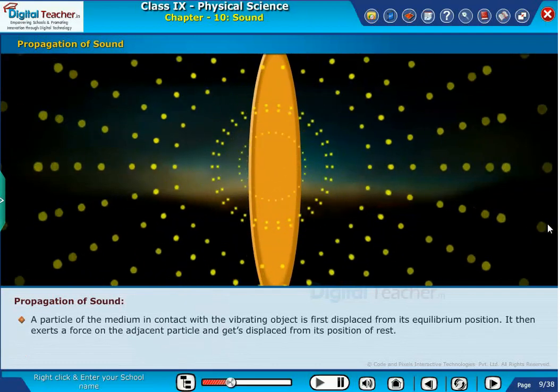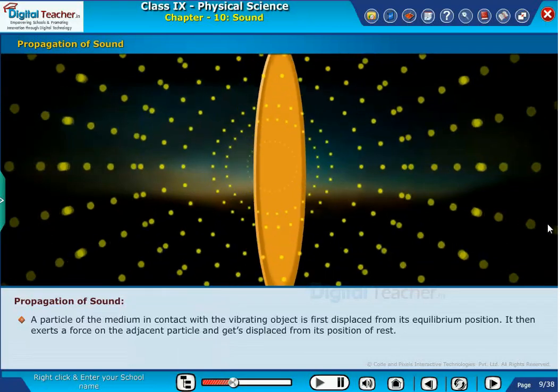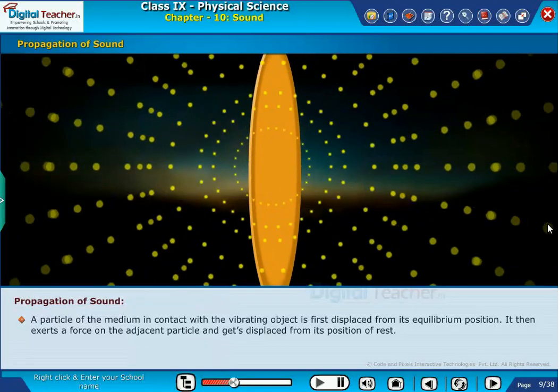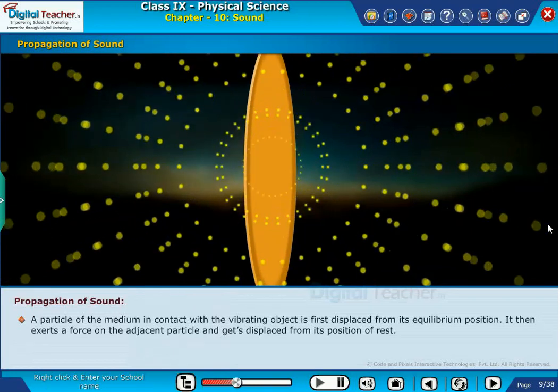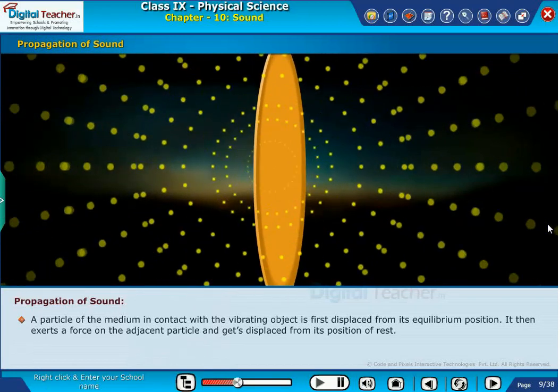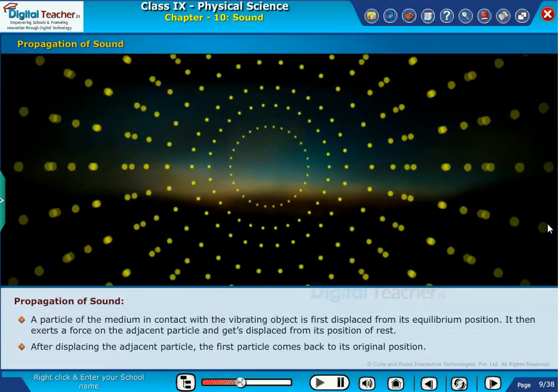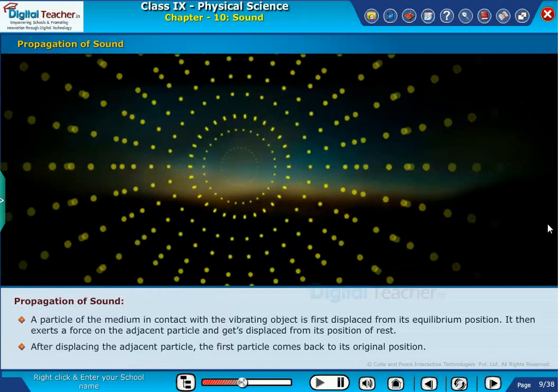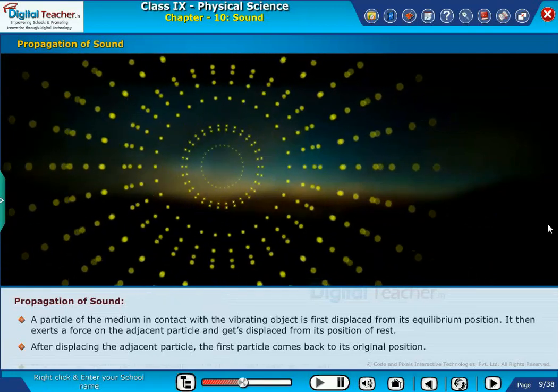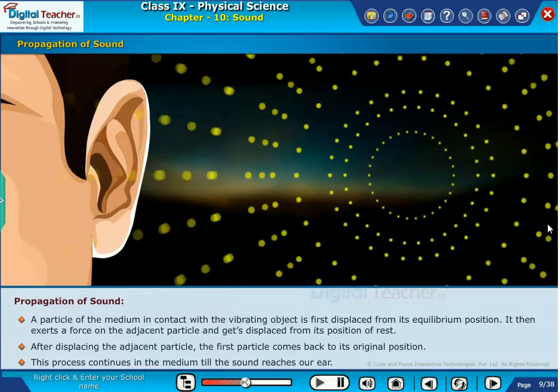A particle of the medium in contact with the vibrating object is first displaced from its equilibrium position. It then exerts a force on the adjacent particle and gets displaced from its position of rest. After displacing the adjacent particle, the first particle comes back to its original position. This process continues in the medium till the sound reaches our ear.